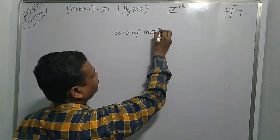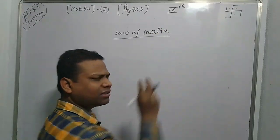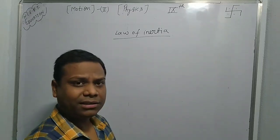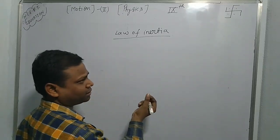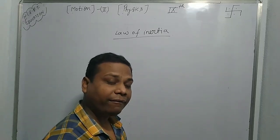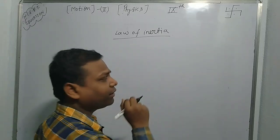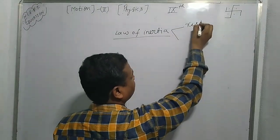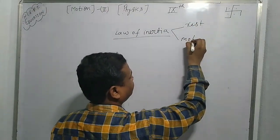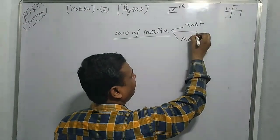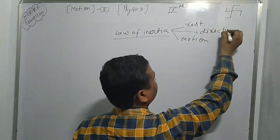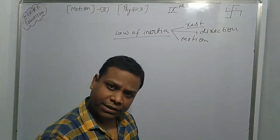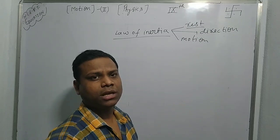What is inertia? Inertia is based on mass. If an object has higher mass, it has higher inertia. There are three types of inertia: inertia of rest, inertia of motion, and inertia of direction.